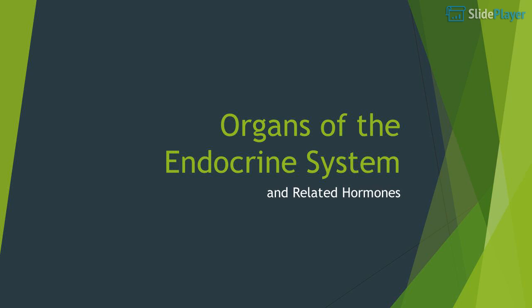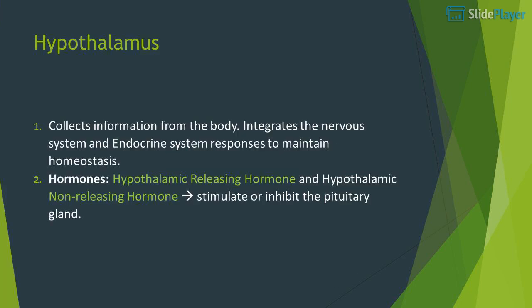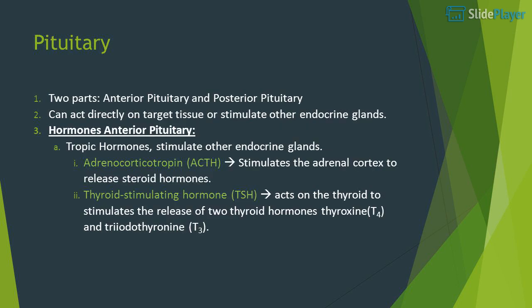Hypothalamus: collects information from the body and integrates the nervous system and endocrine system responses to maintain homeostasis. Hormones: hypothalamic releasing hormone and hypothalamic non-releasing hormone, which stimulate or inhibit the pituitary gland.